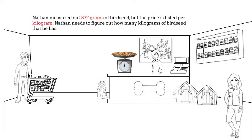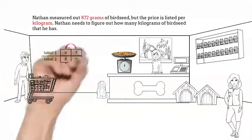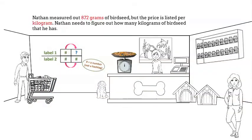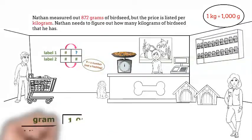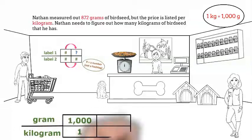Our first measurement problem to convert: Nathan measured out 872 grams of birdseed but the price is listed per kilogram. Nathan needs to figure out how many kilograms of birdseed he has. Remember our graphic organizer, and remember that one kilogram equals 1,000 grams. So let's draw our graphic organizer. We'll set it up as grams to kilograms, so we will have 1,000 to 1.